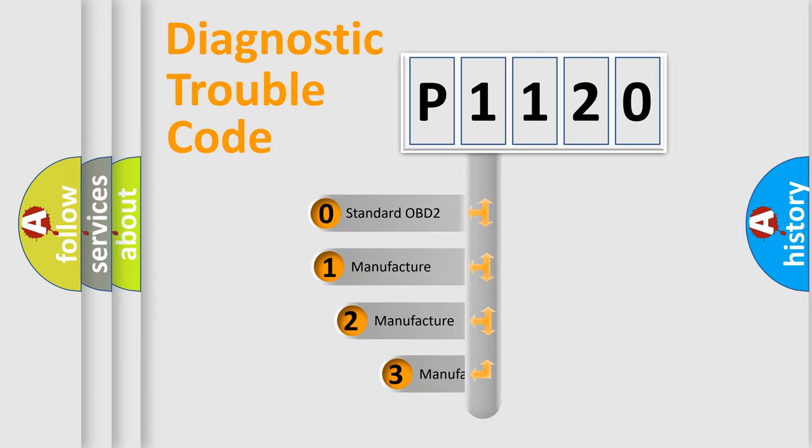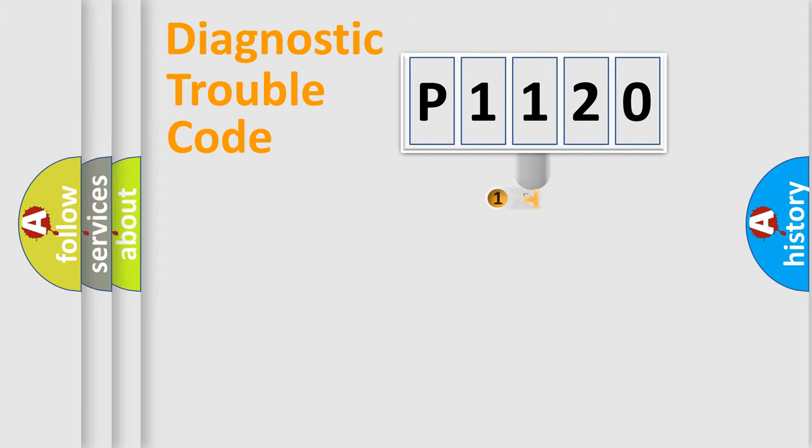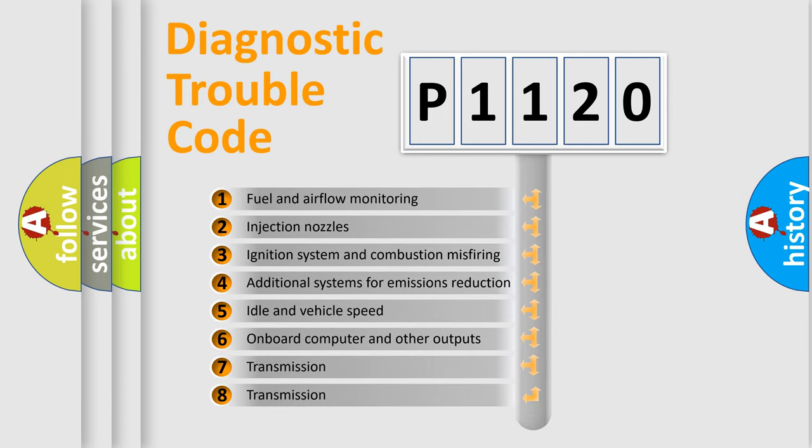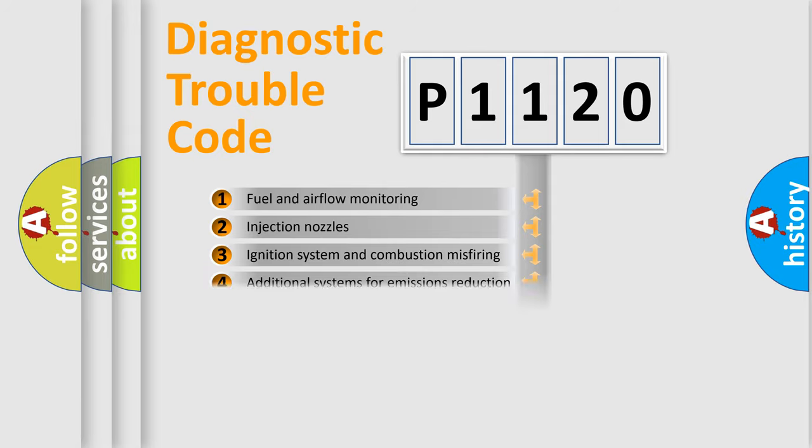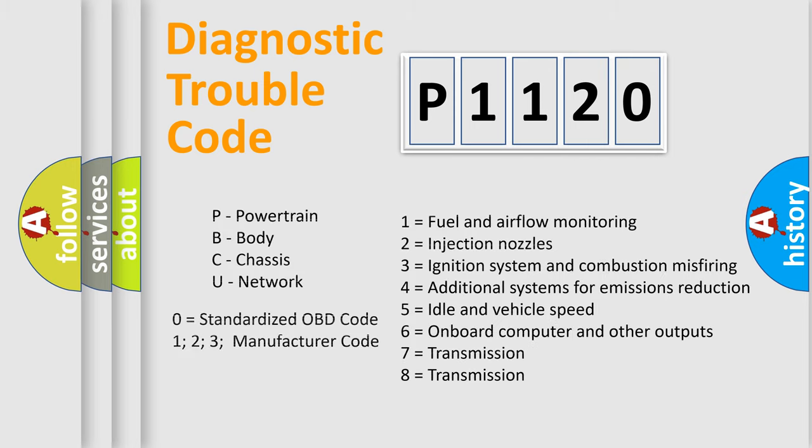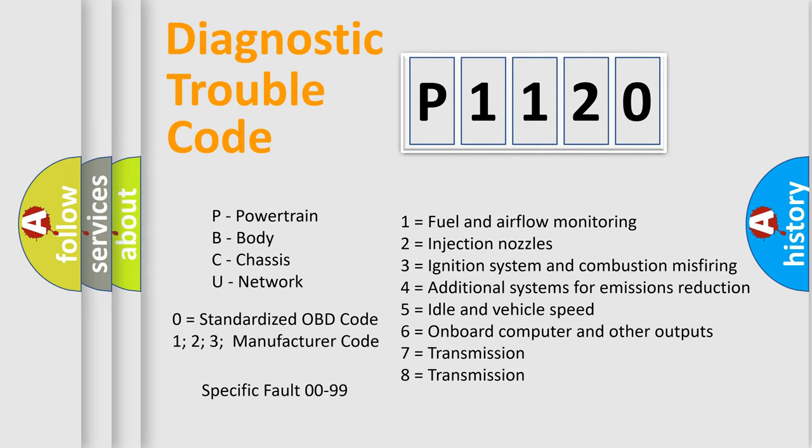If the second character is expressed as zero, it is a standardized error. In the case of numbers 1, 2, or 3, it is a manufacturer-specific expression of the car-specific error. The third character specifies a subset of errors. The distribution shown is valid only for the standardized DTC code. Only the last two characters define the specific fault of the group. Let's not forget that such a division is valid only if the other character code is expressed by the number zero.